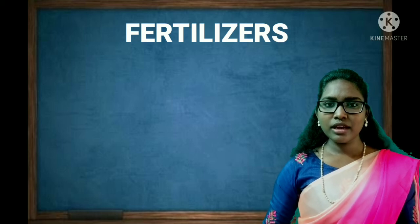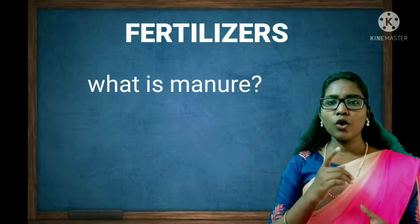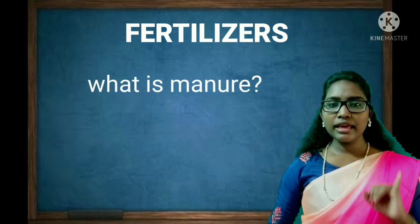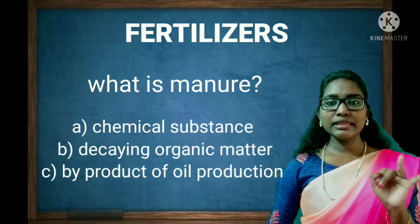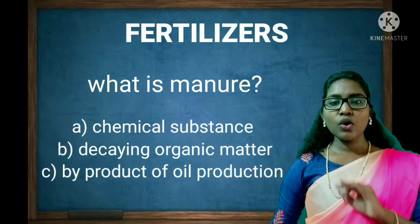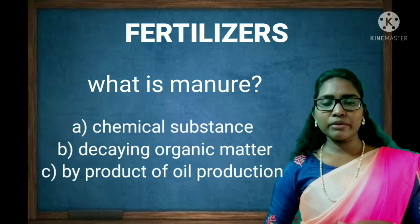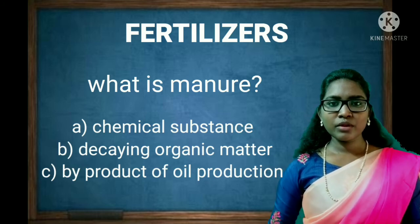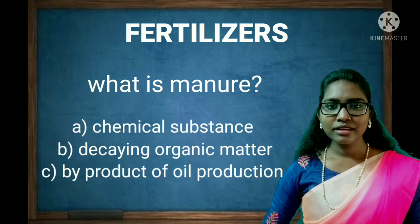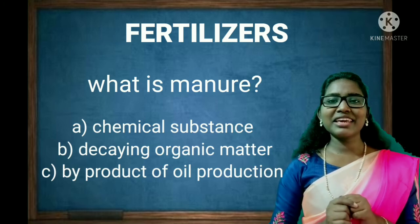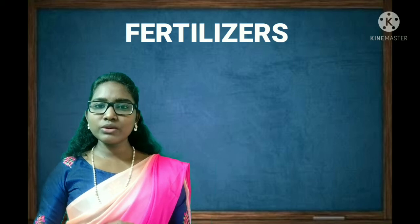Here is your last question: What is manure? Option A: chemical substance. Option B: decaying organic matter. Option C: by-product of oil production. The correct answer is B — decaying organic matter.